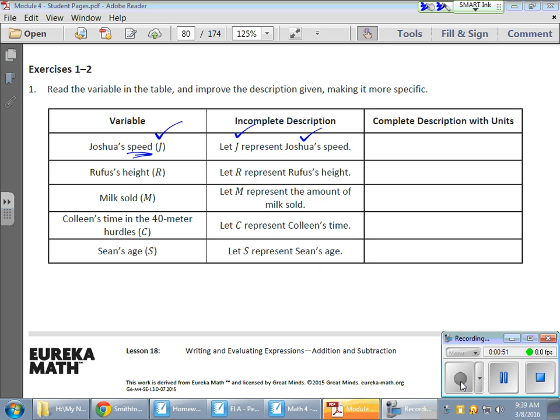So in our complete description with units now, not only are we talking about Joshua's speed, and J is going to represent Joshua's speed, but what specifically is that speed that we're working with here? We're going to say let J represent Joshua's speed in, let's say, meters per second.